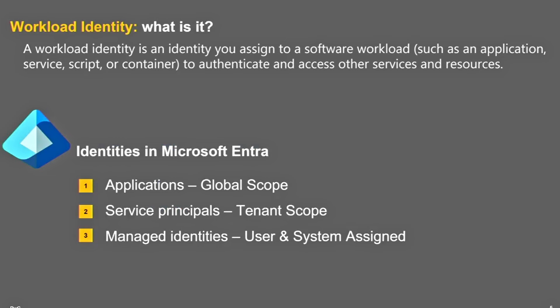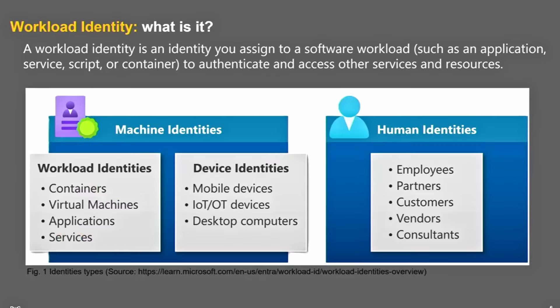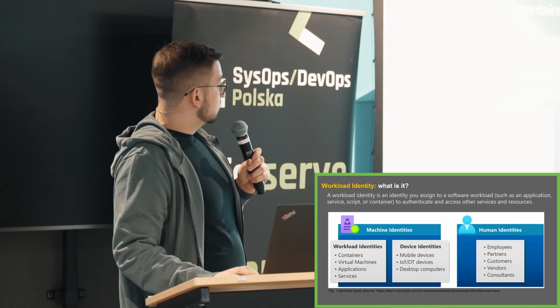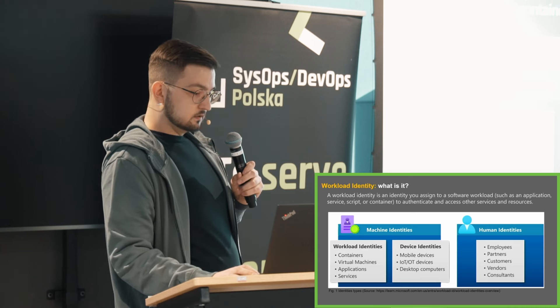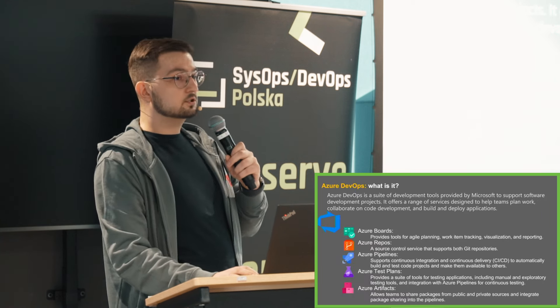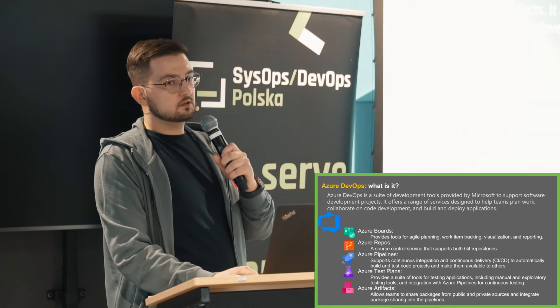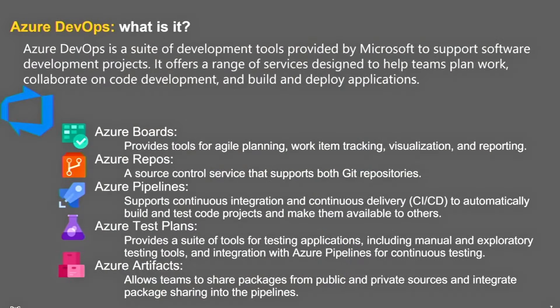Workload identity — mamy rozróżnienie między maszynowymi a użytkownikami faktycznie. Mamy te ludzkie i maszynowe. Ludzkie to wszystkie konta użytkowników, jakimi zarządzamy w obrębie danego systemu. Maszynowe to tożsamości przypisane do urządzeń albo tożsamości przypisane do zasobów, które sobie zdeployujemy. Jeśli chodzi o Azure DevOps — zakładam, że wszyscy go znają, więc przejdziemy dalej.